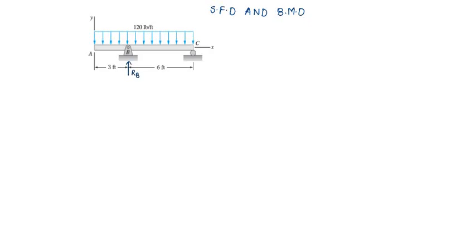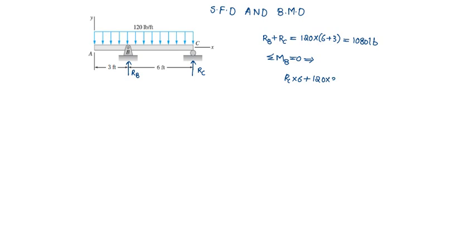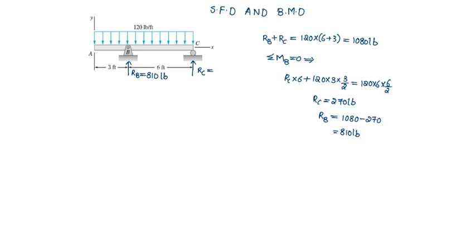Reaction at B is RB and reaction at C is RC. Let us find the reactions first. RB plus RC will be equal to the total downward load, that is 120 into 6 plus 3, which is equal to 1080 pound. Let us equate moments at B to 0, that implies RC into 6 plus the UDL in the AB portion, that is 120 into 3 into 3 by 2, will be equal to the UDL in the BC portion, that is 120 into 6 into 6 by 2. From this, RC will be equal to 270 pound and RB will be equal to 1080 minus 270, that is equal to 810 pound. So the reaction at B is 810 pound and at C it is 270 pound.